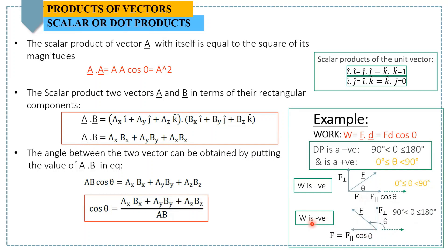There is also a possibility that work is zero. For example, if you try to push a wall and apply a force but the wall doesn't move, the displacement is zero, so work is zero. Another example: if you hold a bag in your hand while standing still, you hold it with a force balanced by gravity, but since displacement is zero, work is again zero.